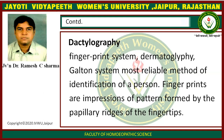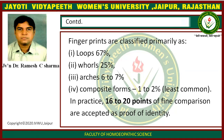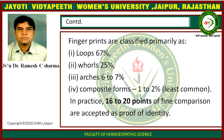Fingerprints are impressions of patterns formed by the ridges of the fingertips. Fingerprints are classified primarily into four types: loops, whorls, arches, and composite points. Loops are 67%, whorls are 25%, arches are 7%, and composite points are 1% to 2% — the least common.